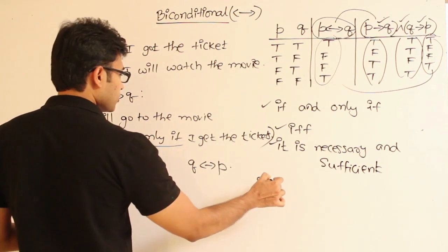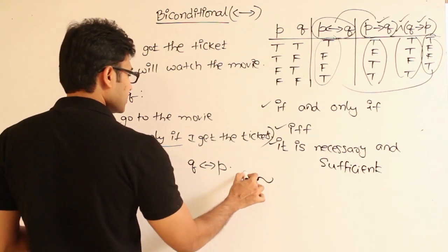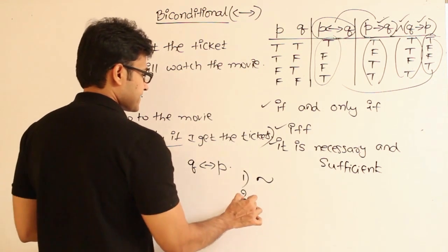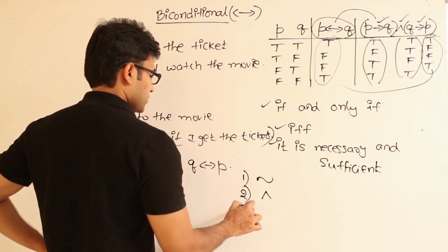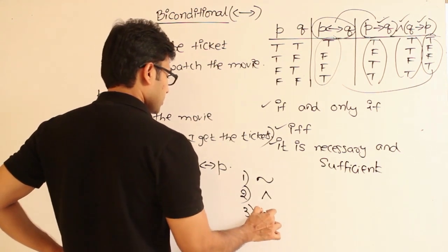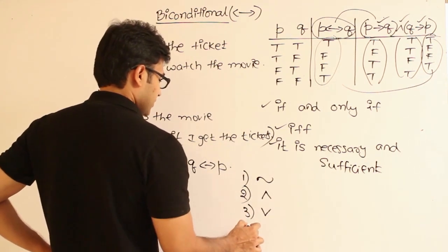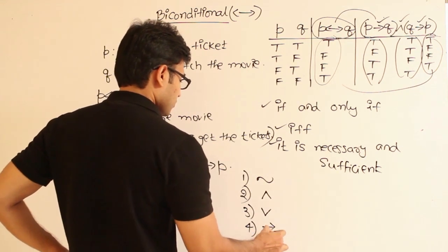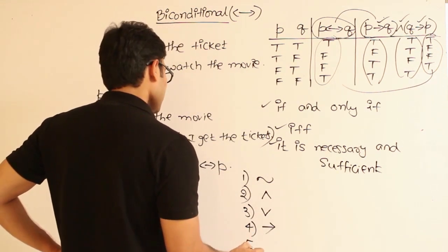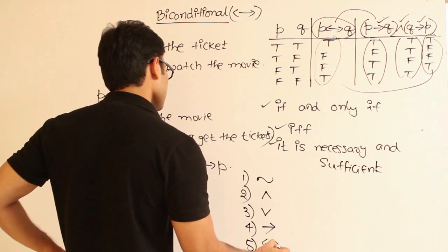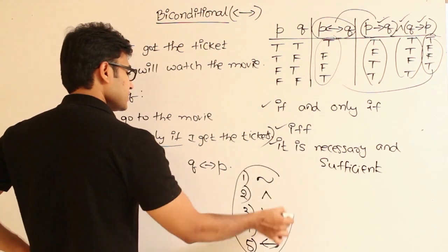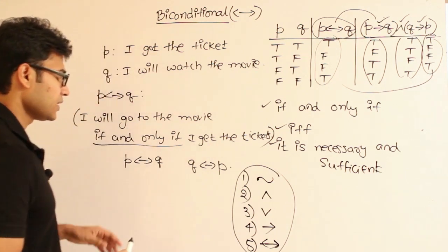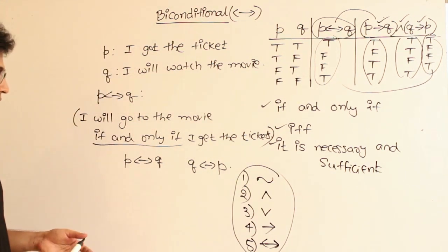Highest precedence is going to be negation - this is the first highest. And the next highest precedence has to be given to conjunction, and the next highest precedence has to be given to disjunction, and the next highest precedence has to be given to implication, and the next highest one has to be given to double implication. Alright, so this is the precedence.